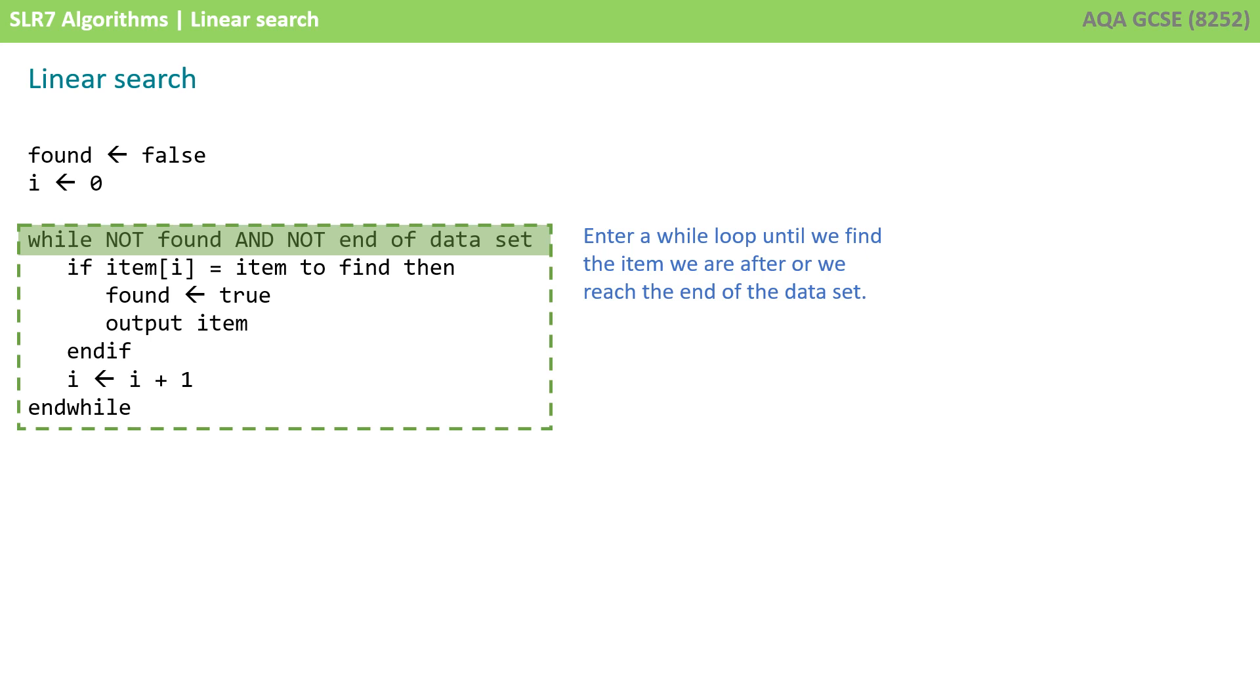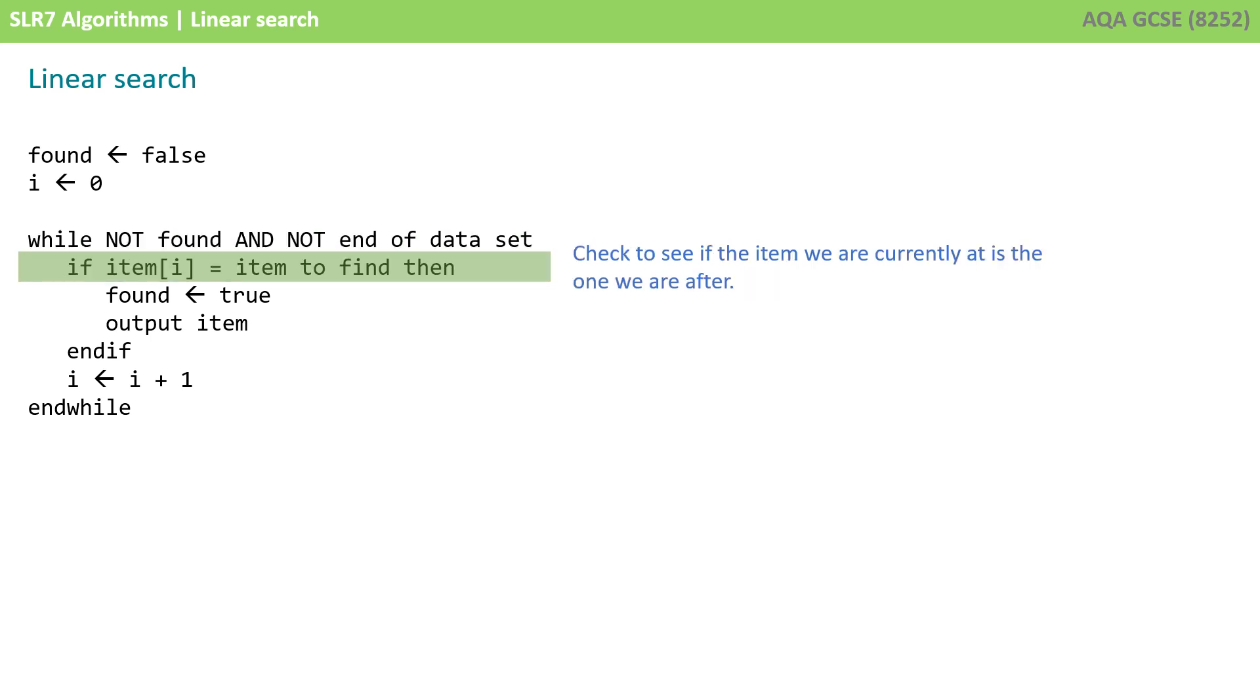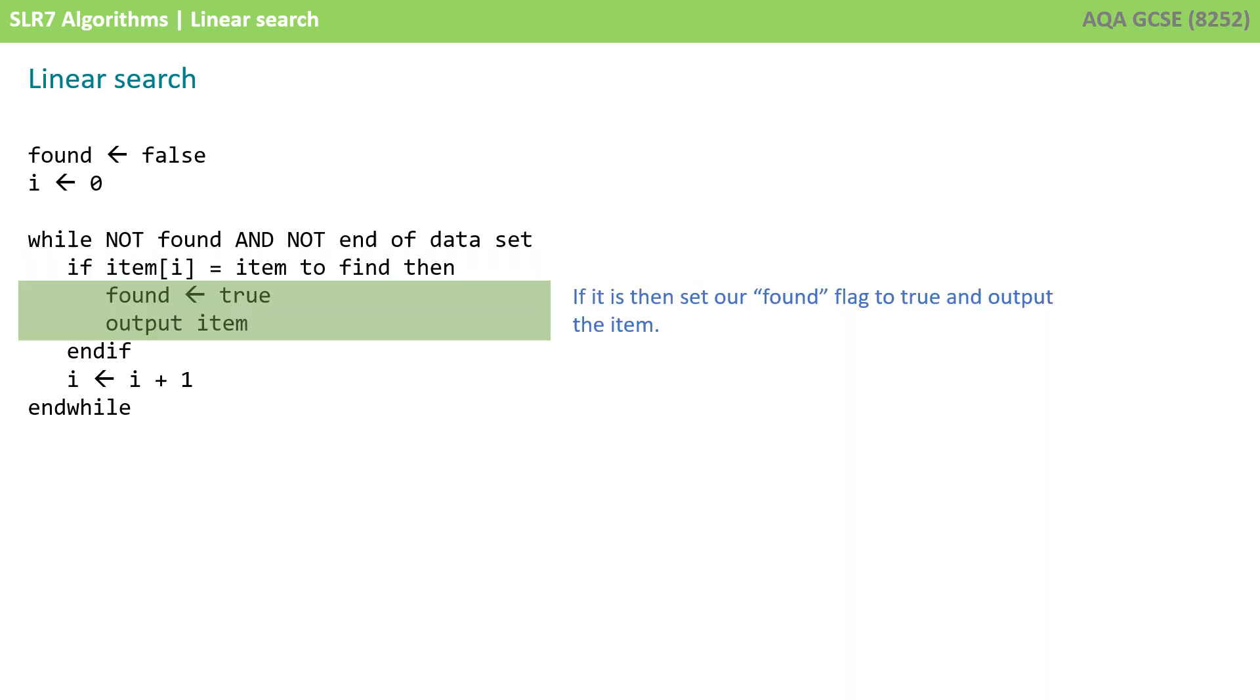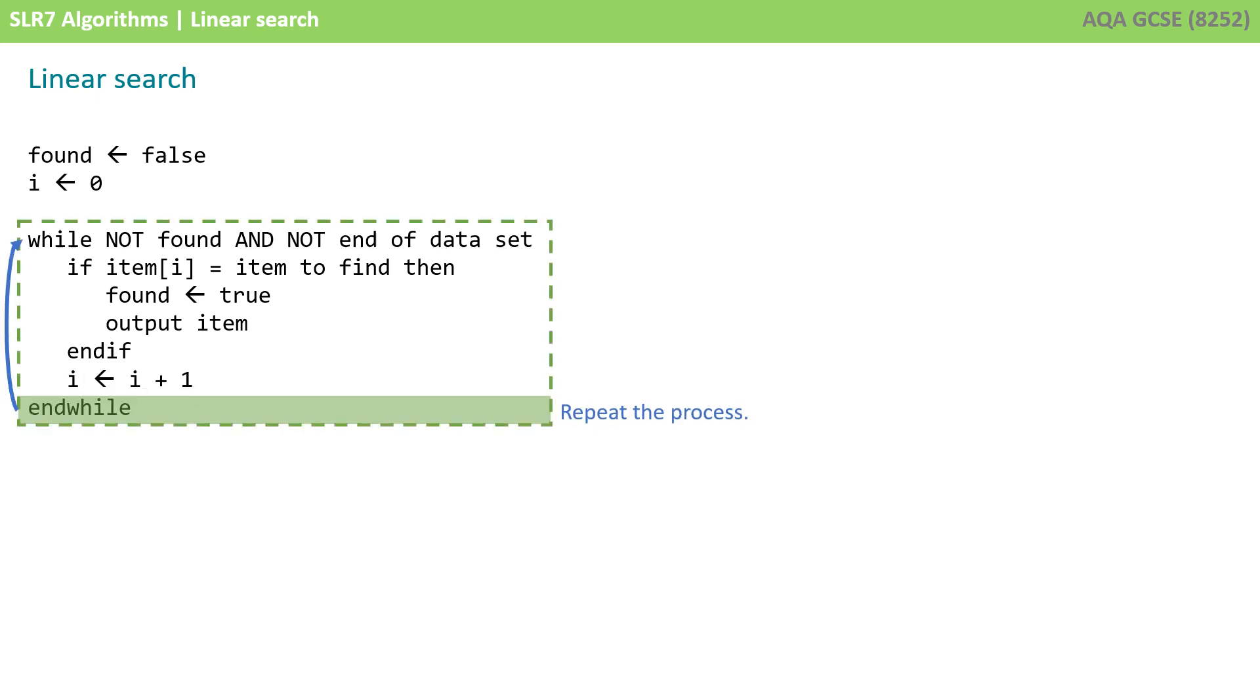We could say, while it's not been found and we're not at the end of the dataset, check each item in the list. We could do this with a simple if statement and say, if item i is equal to the item to find, then found is true and we can output the item. And if not, then we increment i by one. And keep checking the next item and then the next and then the next until we've reached the end of the list or the item has been found.